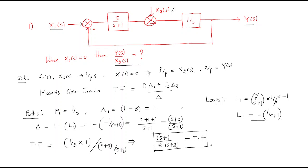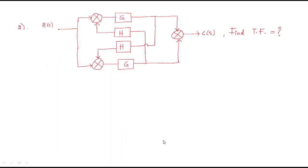This is the transfer function. Block diagrams follow the same approach as signal flow graphs — recognize how many loops are available, how many non-touching loops there are, find Δ1, apply the formula. Now a second problem: a block diagram is given and we need to find the transfer function. This is the input and this is the output.